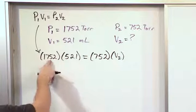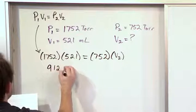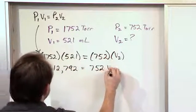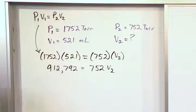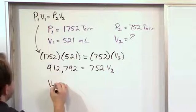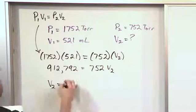Alright, now when you take this number and multiply by this number, you get a large number, 912,792 on the left, and you still get 752 times V2 over here. And then to get V2 by itself, you just divide by 752, so V2 is this large number divided by 752.